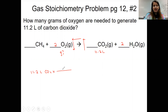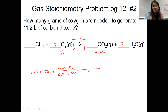Since we have liters of CO₂, liters of CO₂ goes at the bottom of our conversion factor. The number that goes with liters is always going to be 22.4, and we know that 22.4 liters of CO₂ is equal to one mole of CO₂. Once you get into moles, your next step is to use the mole ratio from your balanced reaction. So moles of CO₂ goes at the bottom again, with a coefficient of one for CO₂. I'm trying to find information about oxygen, so moles of oxygen goes on top with a coefficient of two.